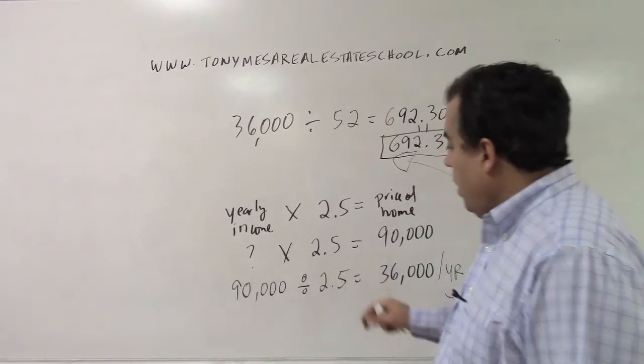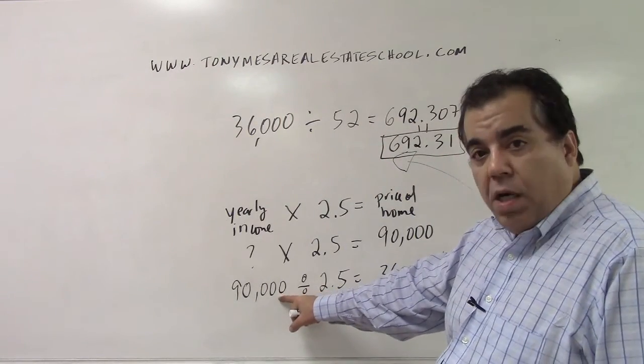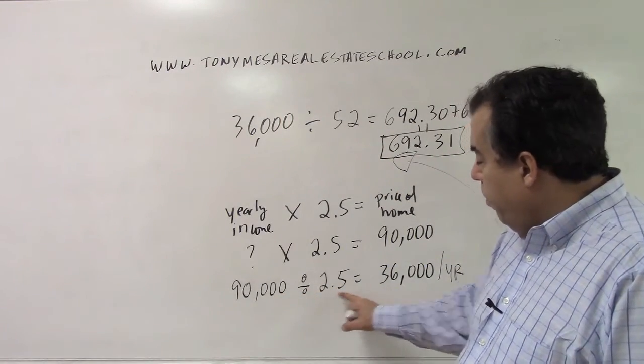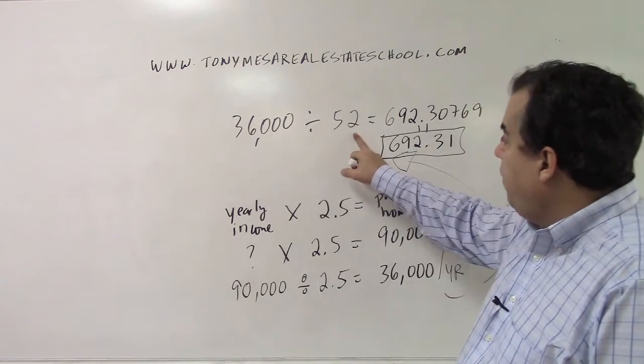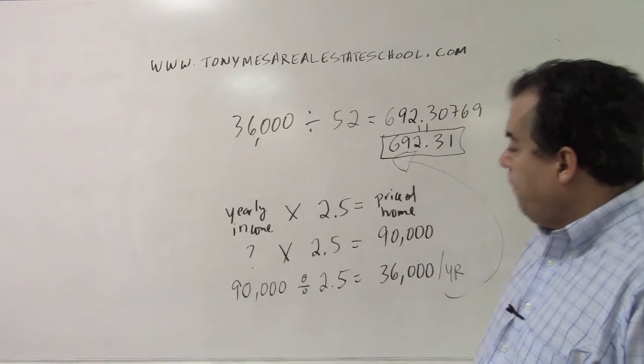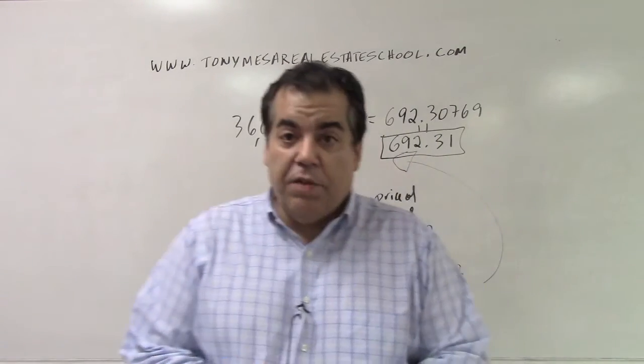So again, what am I doing here? I'm taking the price of the home, dividing it by 2.5 to get my yearly income, and then my yearly income divided by 52 weeks in the year gives me how much I have to make per week. Thanks, everybody.